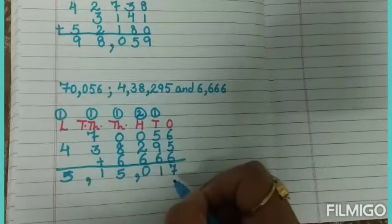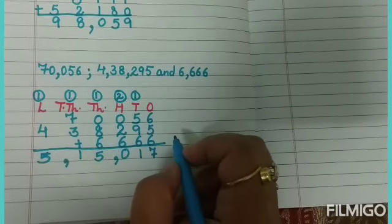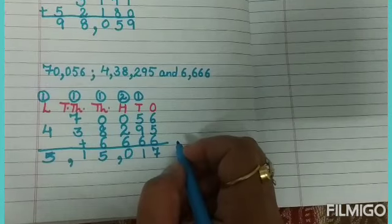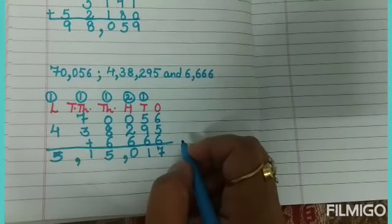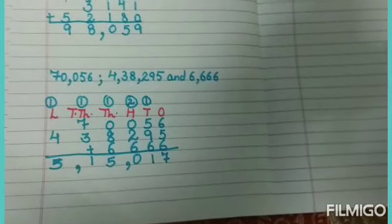Now put commas here and here. The answer is 5 lakh, 15 thousand, 17. So in this way, you can easily do addition of five-digit and six-digit numbers. That's all for today. Thank you and have a good day.